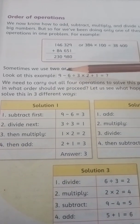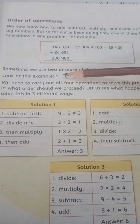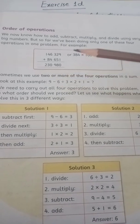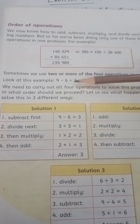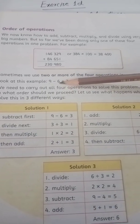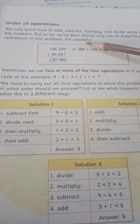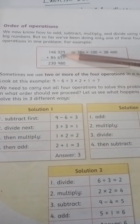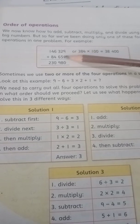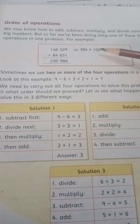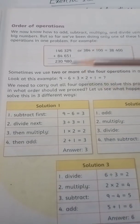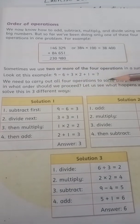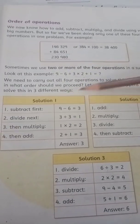Students, now we know how to add, subtract, multiply and divide using very big numbers. But so far we have been doing only one of these four operations in one problem. For example, students, it is easy for you to add these two numbers or to multiply these two numbers. But sometimes we use two or more of the four operations in a sum. Look at this example.